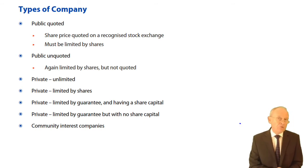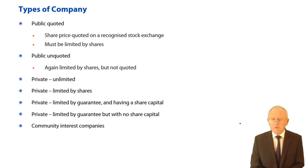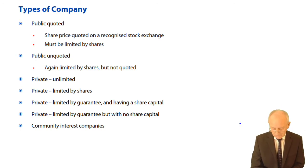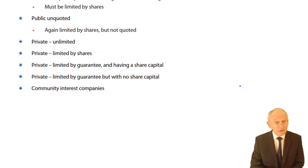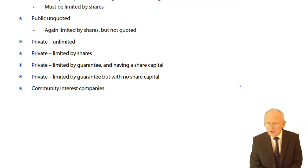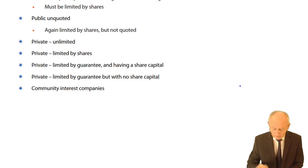Then we get the vast majority of companies — private companies. First, we can have unlimited companies, which are a very rare animal. Then private limited companies, limited by shares; private limited by guarantee with a share capital; private limited by guarantee with no share capital — again, unusual. And then we have the community interest companies.